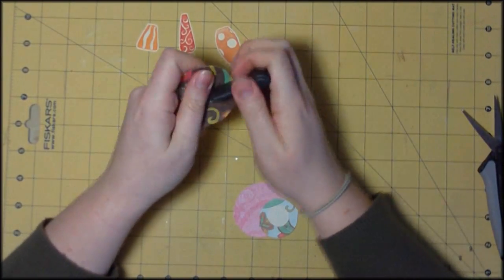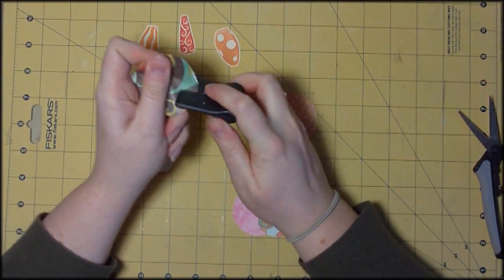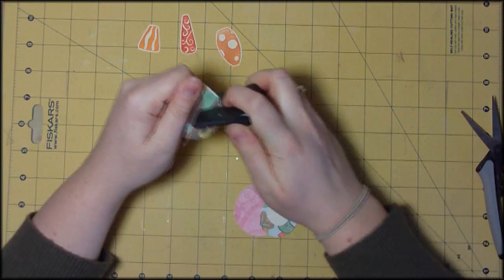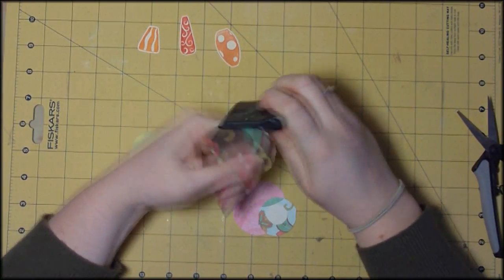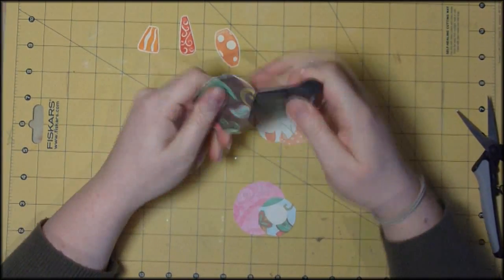So I've already cut all those out and rough cut the circles and now I'm using my Making Memories edge scraper just to roughen up these edges. And I'm not being precious about this at all.